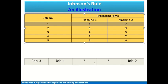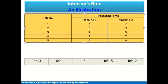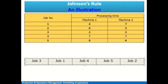We are now left with jobs four and five. The minimum processing time is six, for job five on machine two. Since it is machine two, we fill from the right-hand side, placing job five immediately before the last assigned job. We then cancel job five from the list. Only job four remains, so it fills the one remaining position. The final sequence is: job three, job one, job four, job five, job two — and this is the sequence that minimizes the idle time of these machines.